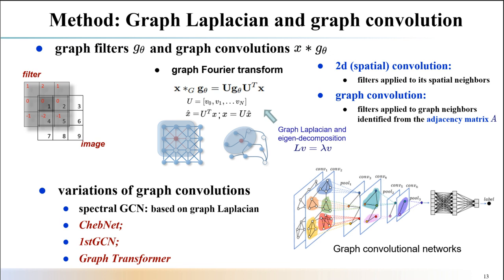So what is graph convolution? The simple answer is it generalizes the classical convolutional operation from a grid structure, just like a natural image, into a graph structure in the graph domain. The only difference from classical convolution is it calculates the weighted sum of features from neighbors defined in a distance matrix, instead of using spatial neighbors.